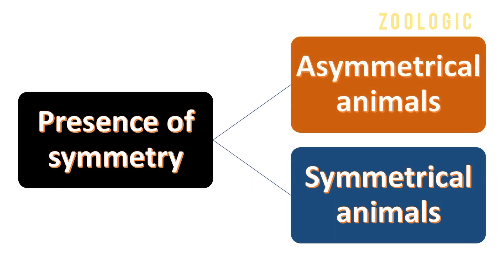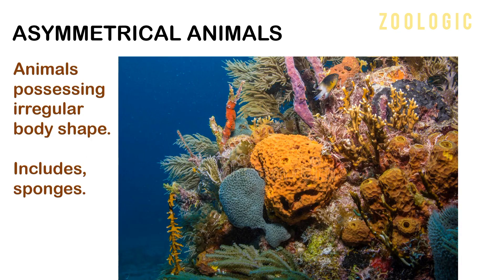On the basis of presence of symmetry, animals can be categorized as asymmetrical animals and symmetrical animals. Animals which possess an irregular body shape and have no plane of symmetry are termed as asymmetrical animals. They include sponges, which belong to phylum Porifera. As seen in the image, sponges have no definite shape and are irregular in structure, thus they are asymmetrical animals.